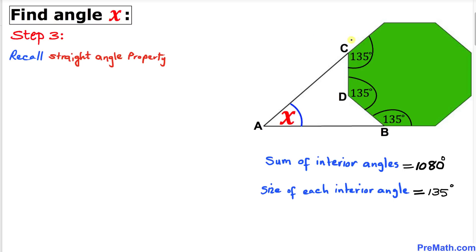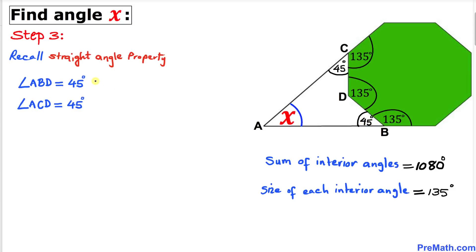Now let's recall the straight angle property and focus on point C. The interior angle at C is 135 degrees, and the straight angle is 180 degrees. So the remaining angle at C is 180 minus 135, giving us 45 degrees. Therefore angle ABD is 45 degrees and angle ACD is 45 degrees as well.